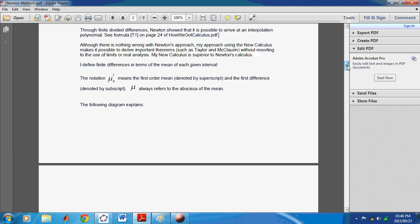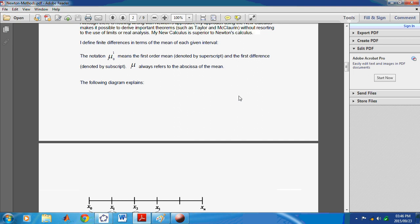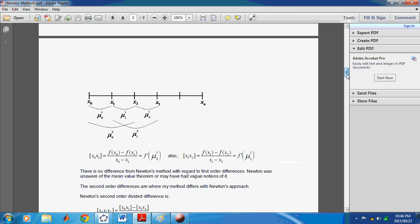So, let's see how it's constructed. I define finite differences in terms of the mean of each given interval. So, for example, the notation mu subscript 0 and superscript 1 means the first order mean. And the first difference denoted by the subscript. So, mu always refers to the abscissa or the x-coordinate of the mean. And the following diagram explains.